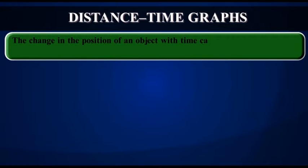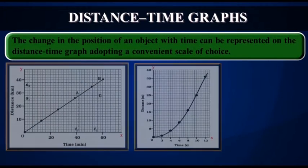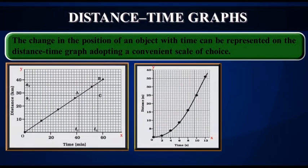Distance Time Graphs: The change in the position of an object with time can be represented on the Distance Time Graph, adopting a convenient scale of choice. In this graph, time is taken along the x-axis and distance is taken along the y-axis.